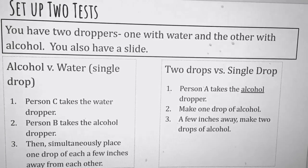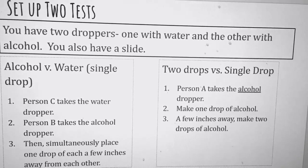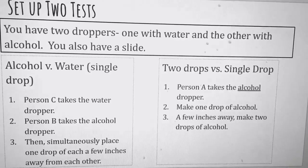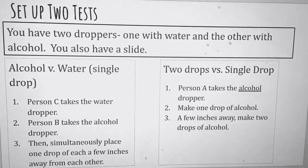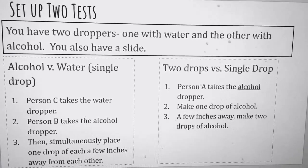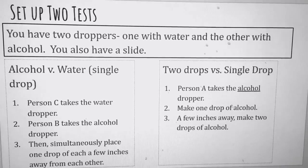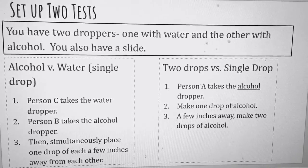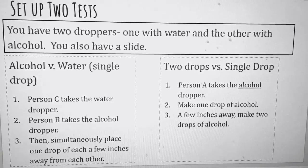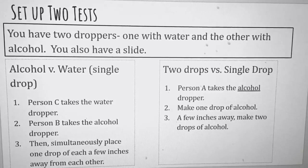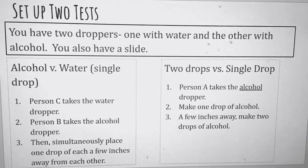We're gonna set up two tests. The first test is a drop of rubbing alcohol versus a drop of water - we're gonna put them down at the exact same time and observe them. We should be taking note of their shape, any changes you notice, and adding that to your data table. The second one is two drops versus a single drop, all with rubbing alcohol.